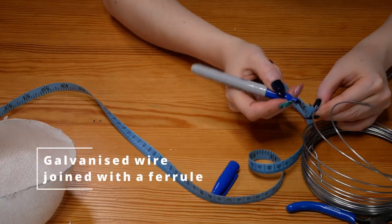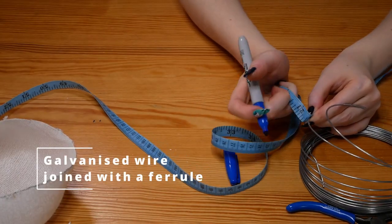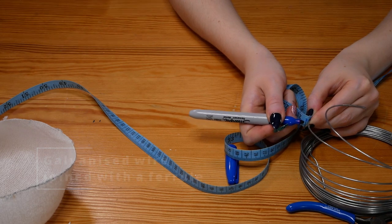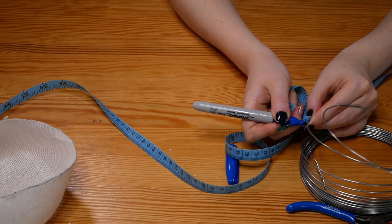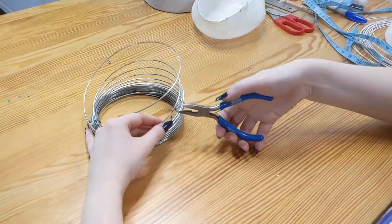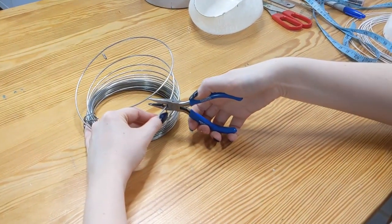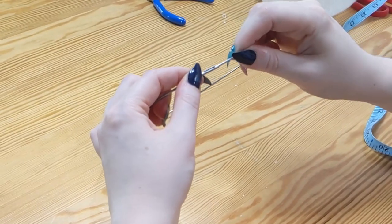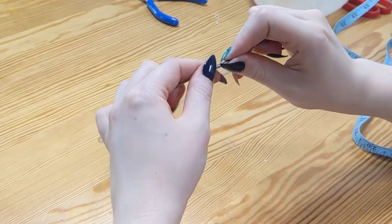And now, the galvanised wire join. I'll measure the wire the same way as I did before and cut with the wire cutters. Although this time, no need for an overlap, as I'm going to use a ferrule to do the join. It magically slots in. This is so much faster than the sewing.